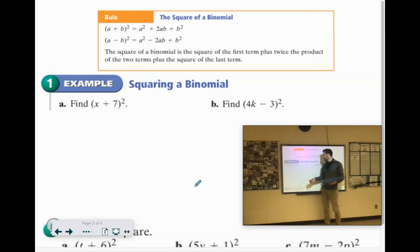When you square something, you're multiplying it by itself, right? So this is really the same as X plus 7 times X plus 7. Now if you were to FOIL that out,